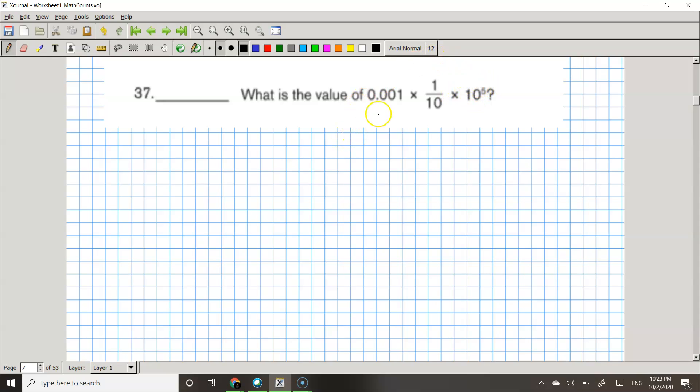So in order to make this problem simpler and easier, let's make these all into fractions. So 0.001 would become 1 over 1,000. And then 1 over 10 would stay the same. And then 10 to the power of 5 would be 100,000.